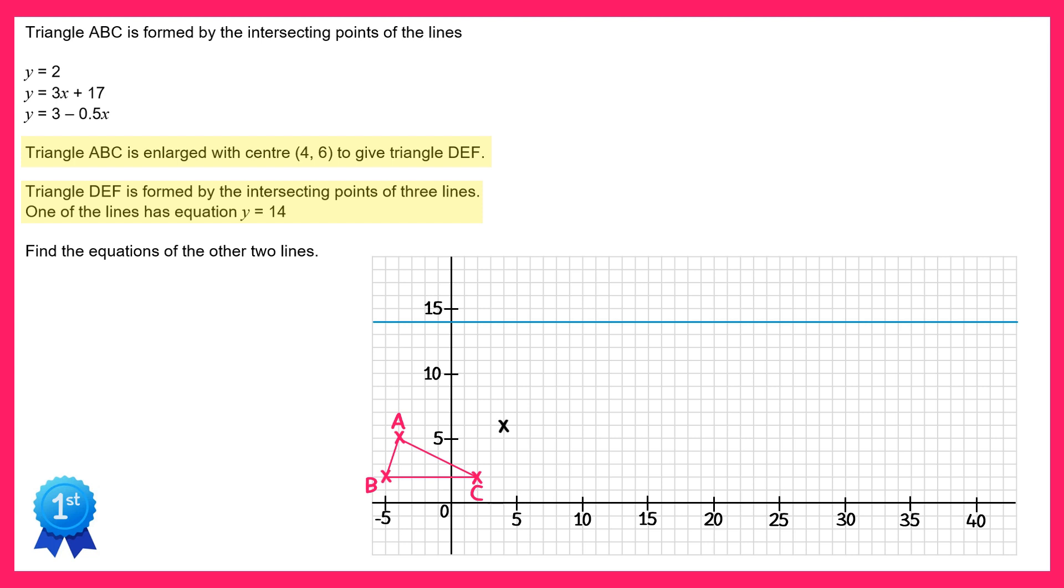We can now see from the diagram that the centre is in between the two shapes, the object and the image. This means we must be dealing with a negative scale factor enlargement. So we know the shape is going to flip upside down.